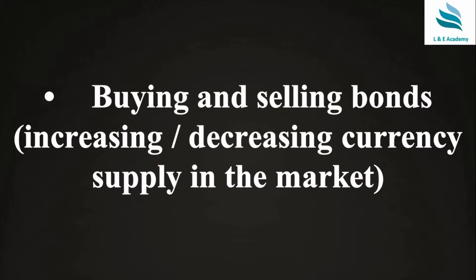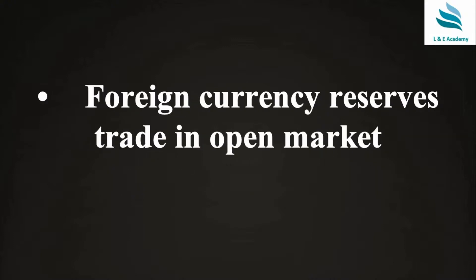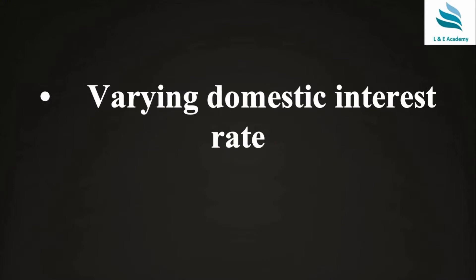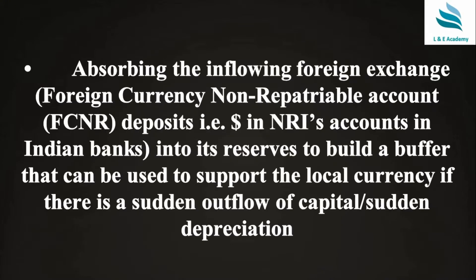Buying and selling bonds is like increasing and decreasing currency supply in the market, and this can be done by RBI. RBI is the authority in the country which can control the fluctuations in the currency. RBI's tools include foreign currency reserves, trade in the open market, and varying domestic interest rates.